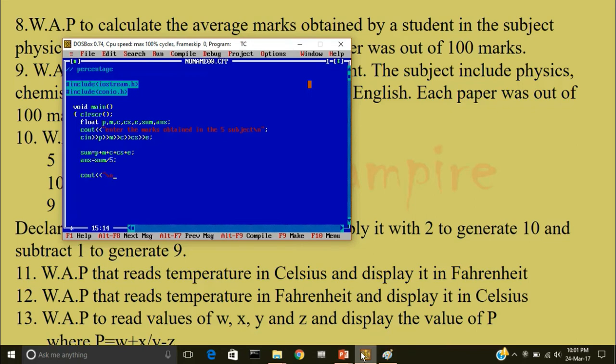Cout slash n percentage of the student is less than less than answer. Get CH. Now it shows the main body of the program. I'll compile it.